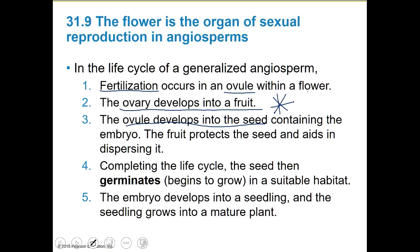The seed contains the embryo. The fruit protects the seed and aids in dispersing it — the fruit is a protective coat. These are seeds protected by the fruit on the outside. Completing the life cycle, the seed germinates or begins to grow in a suitable habitat. Germination is where you see the seeds starting to sprout. The embryo develops into a seedling — like a baby plant — and the seedling will grow into a mature plant.